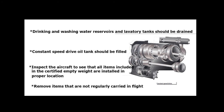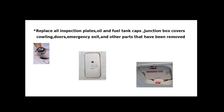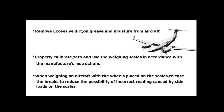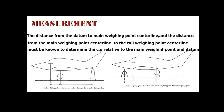Inspect the aircraft to see that all items included in the certified empty weight are installed in proper locations. Remove items not regularly carried in flight. Replace oil inspection plates, oil and fuel tank caps, junction box covers, cowling, doors, emergency exits, and other parts that have been removed. Remove excessive dirt, oil, grease, and moisture from the aircraft. Properly calibrate, zero, and use the weighing scales per the manufacturer's instructions. When weighing an aircraft with wheels on the scales, release the brakes to reduce the possibility of incorrect readings caused by side loads on the scales.